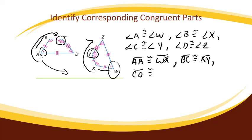Moving counterclockwise around both trapezoids. And then lastly, I would have segment DA is congruent to ZW.